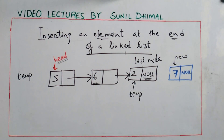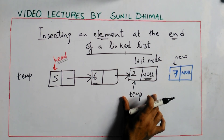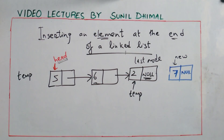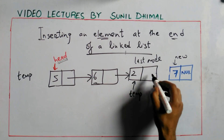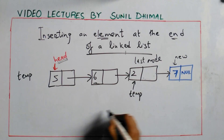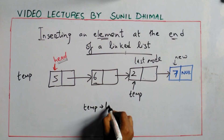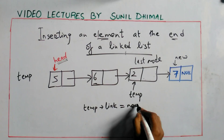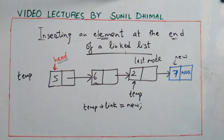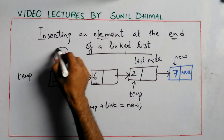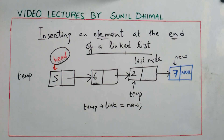Now temp is pointing to the last node of the current list, and head is still pointing to the first node. To insert the new node, we simply set the link of temp to equal new — linking them together. This gives us a new list with four elements, and head remains the pointer to the first node. This is how you insert a new node at the end of the list.